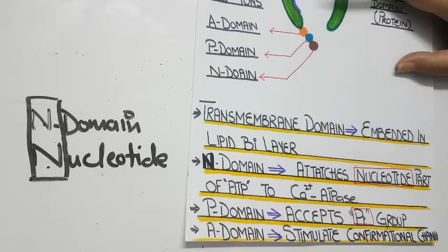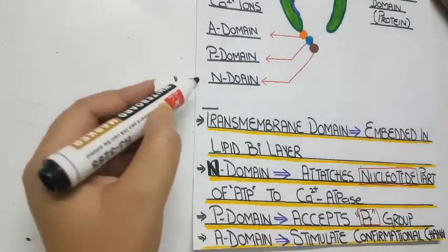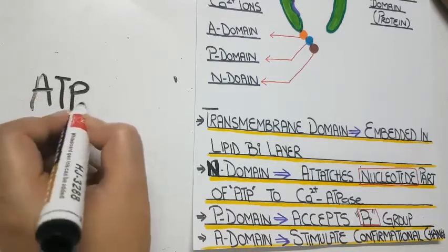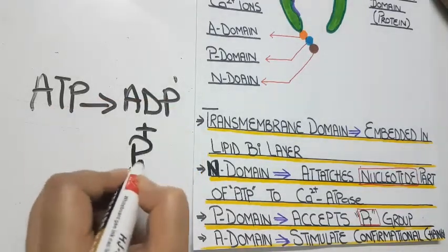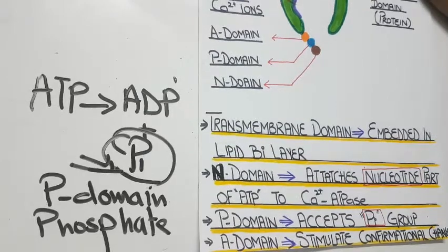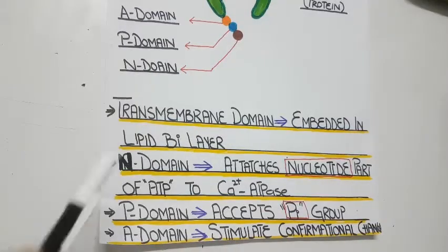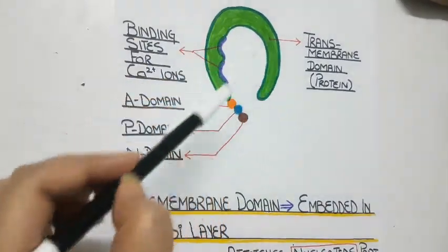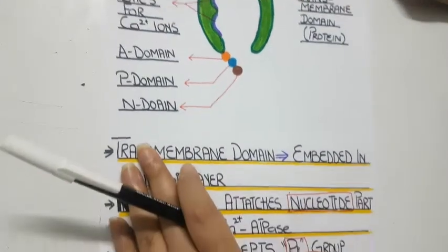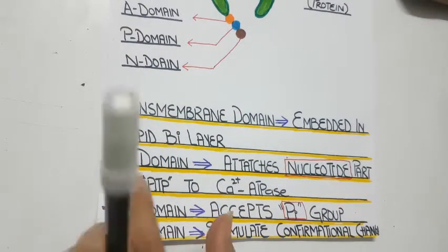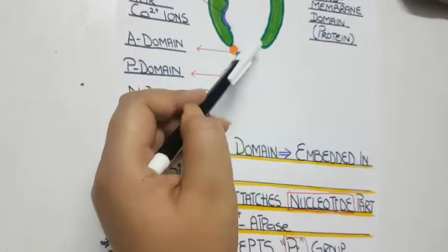N comes from nucleotide. The P domain is that which accepts the phosphate group released as a result of breakdown of ATP into ADP and phosphate, and P domain gets its name from phosphate. The A domain is that part which connects the transmembrane domain with the P and N domains. The A domain accepts the energy released from the breakdown of ATP and transfers that energy to the transmembrane domain.